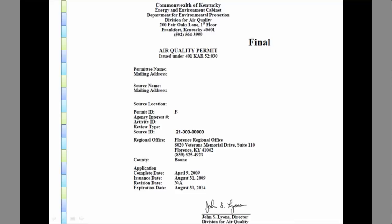The permit ID will start with a G, S, F, or V for the different types of permits. The agency interest number is a very important identifier when dealing with the Kentucky Department for Environmental Protection — it is a good number to memorize or at least have handy.